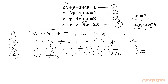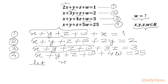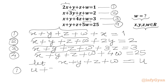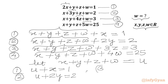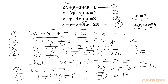Now in each of the equations we have x plus y plus z plus w. Let us assume x plus y plus z plus w is equal to u. So we can write: the first equation as u plus x equal to 1, the second equation as u plus 2y equal to 2, the third equation as u plus 3z equal to 3, and the fourth equation as u plus 4w equal to 25.